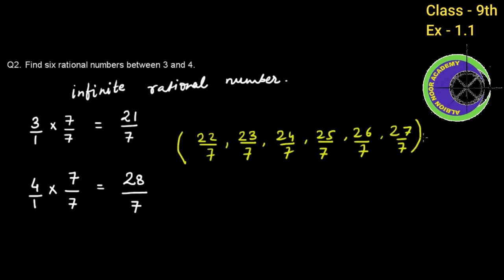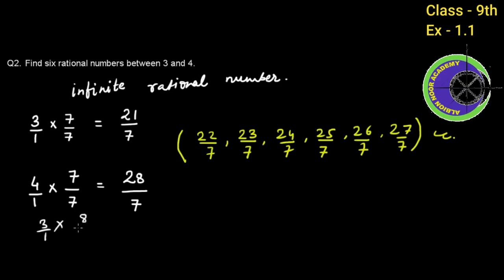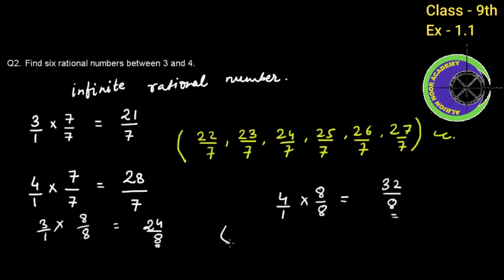You can also do this another way. You can multiply by 6 plus 2, that is, by 8. In the case of 3 by 1 multiplied by 8, this gives 24 by 8. And 4 by 1 multiplied by 8 gives 32 by 8. So the rational numbers between them are 25 by 8, 26 by 8, up to 31 by 8. We need 6 rational numbers, and this gives us exactly 6.